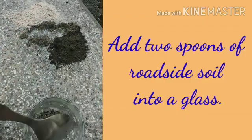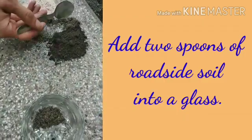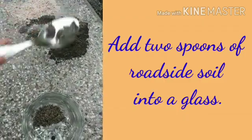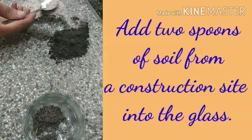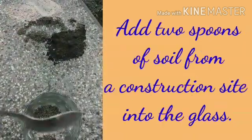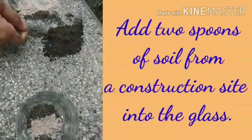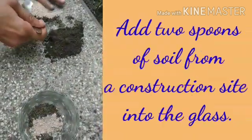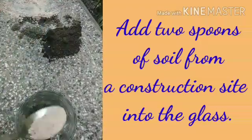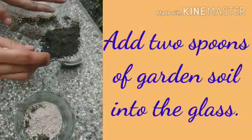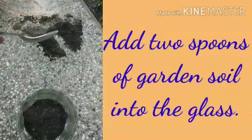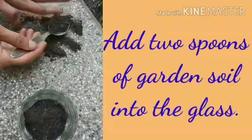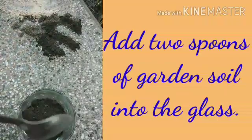Add two spoons of roadside soil into a glass. Add two spoons of soil from a construction site into the glass. Add two spoons of garden soil into the glass.